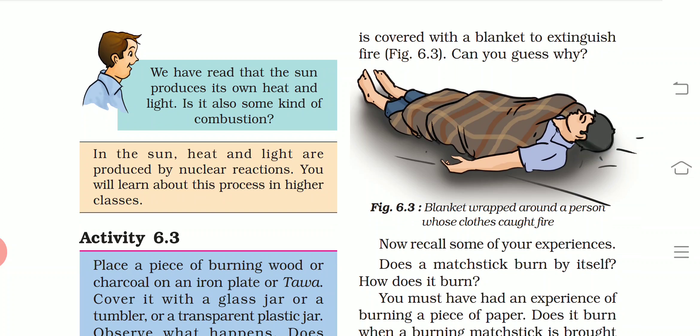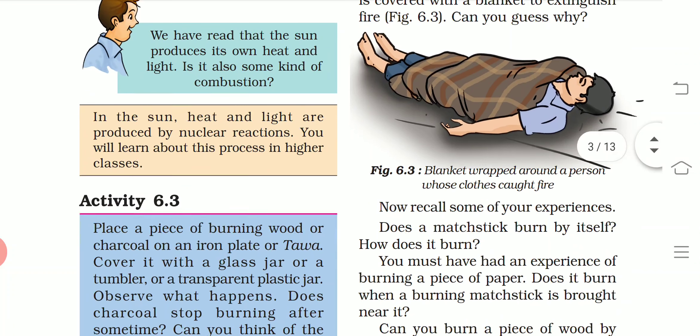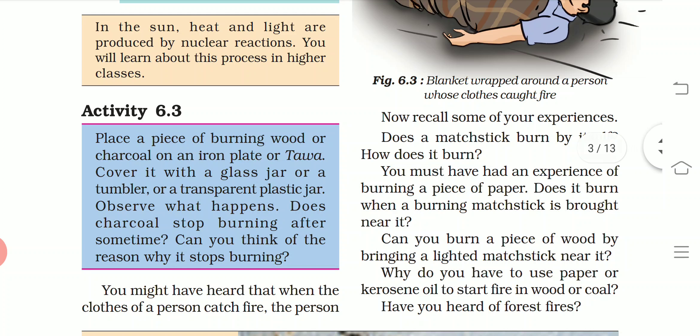The sun produces its own heat and light through nuclear reactions — it is also a kind of combustion. The sun is the ultimate source of energy, and these nuclear reactions are never-ending; they continuously go on. You will learn about this process in higher classes.